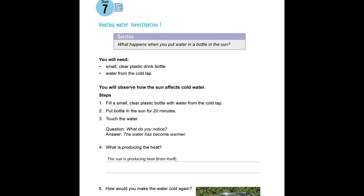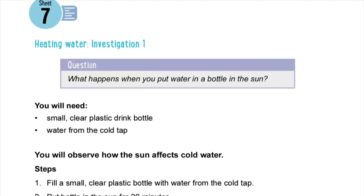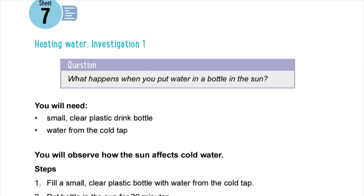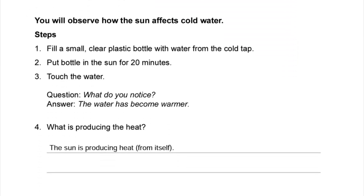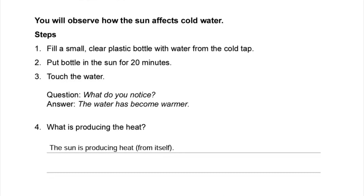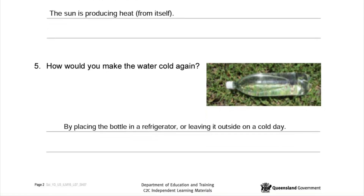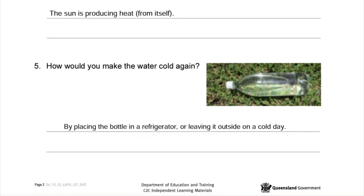I also conducted an experiment to observe how the sun affects cold water. First, I put cold water in a bottle in the sun for 20 minutes. When I went to check, I noticed that the water had become much warmer. The sun was producing heat from itself. Also, if I wanted to make the water cold again, I could place the bottle in a refrigerator or leave it outside on a very cold day.